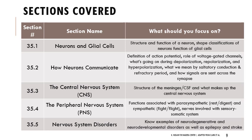For the central nervous system, we'll think about what makes it up. You might have heard about the meninges - and meningitis, which is swelling of those meninges - and CSF, which is cerebrospinal fluid. Then we'll talk about the peripheral nervous system, comparing the parasympathetic response, which is rest and digest, and the sympathetic, which is fight or flight. We'll also discuss some nervous system disorders - you should know examples of neurodegenerative disorders, neurodevelopmental disorders, and be familiar with epilepsy and stroke.